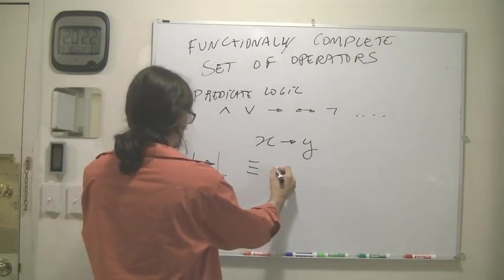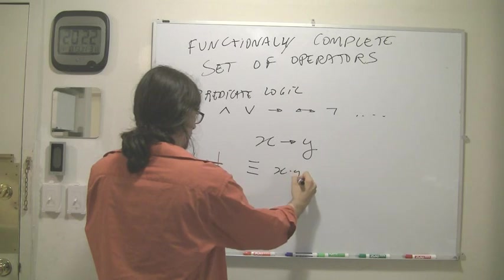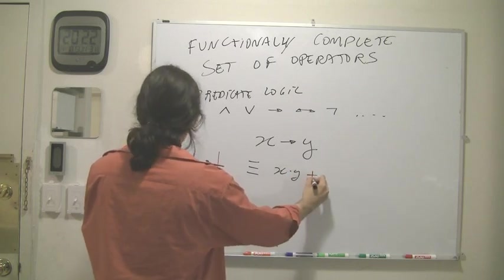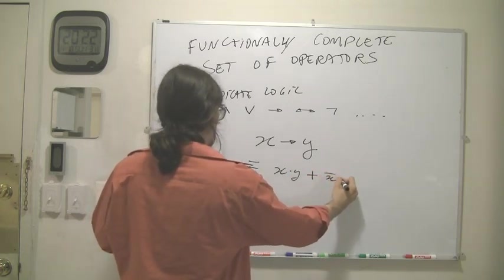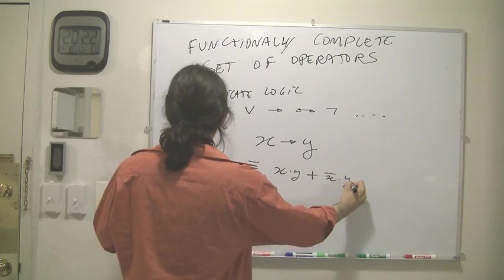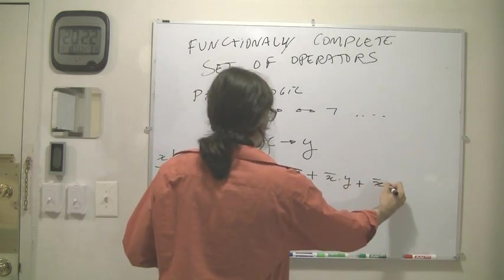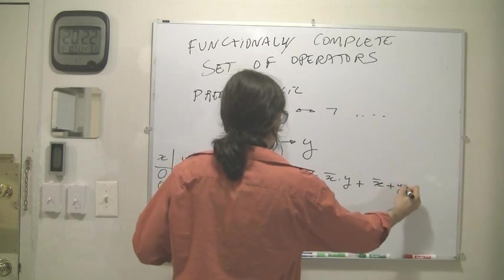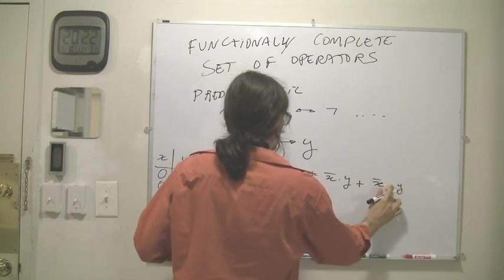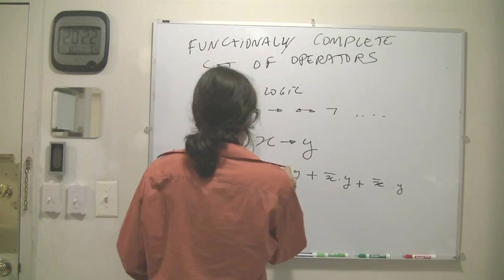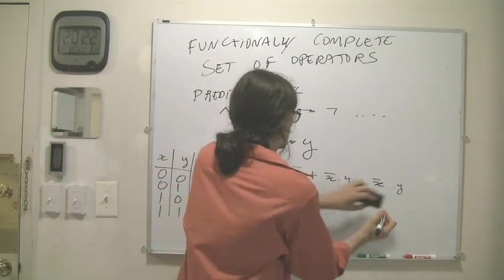So we can just write, this thing is going to be exactly equivalent to row 0 or row 1 or row 3. That's going to be x and y, or not x and y, or not x and not y. I think it's in the opposite order, but you get the idea. So this is not x not y, and this is x. Come on.